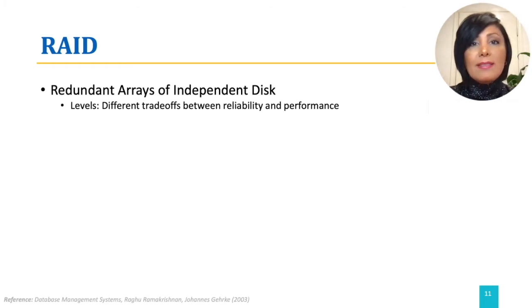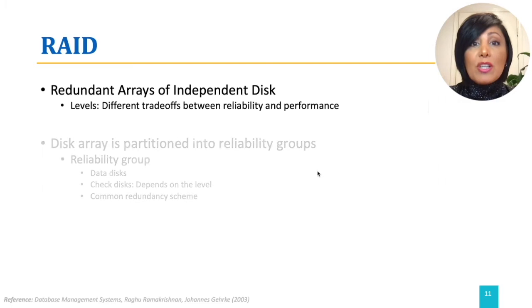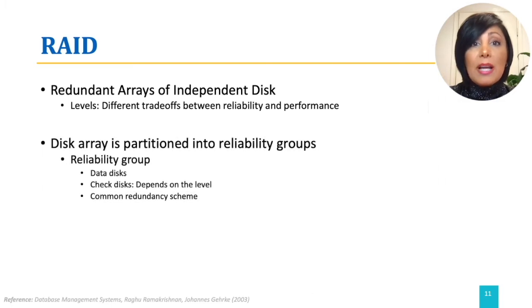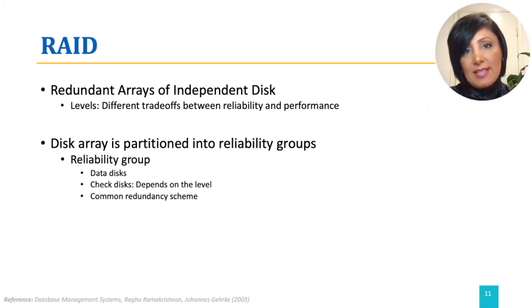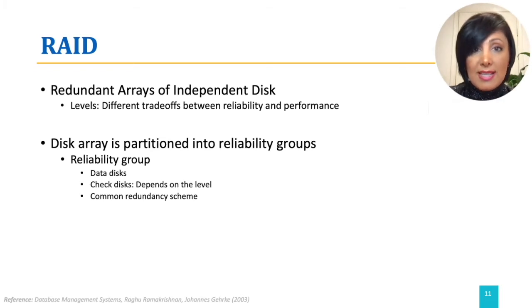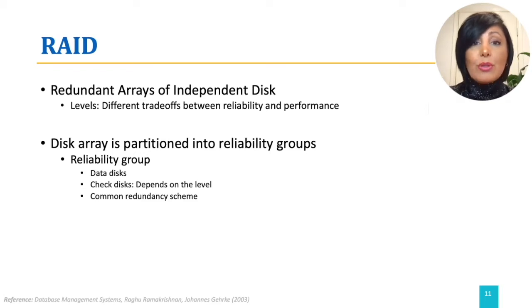In RAID, the disk storage is partitioned into reliability groups, which is a set of data disks and a set of check disks. A common redundancy scheme such as Hamming codes, parity, or Reed-Solomon codes is applied to a reliability group.